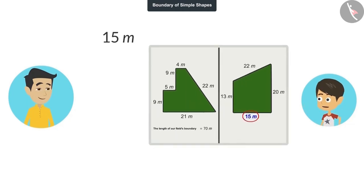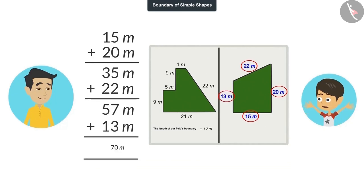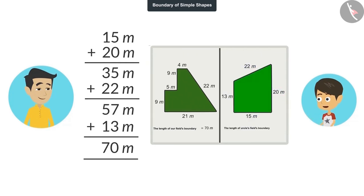15 added to 20 is 35 meters. 22 meters added to 35 is 57 meters. And when 13 meters are added to 57 meters, the answer will be 70 meters. Papa, the length of uncle's farm's boundary is 70 meters.